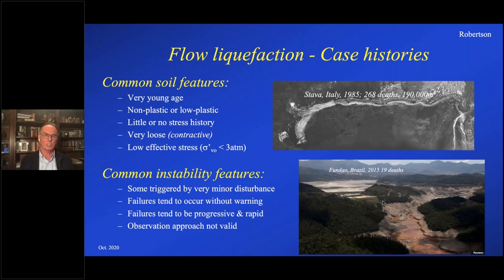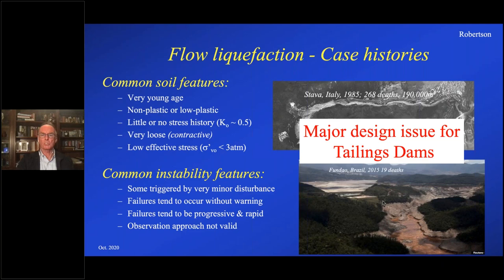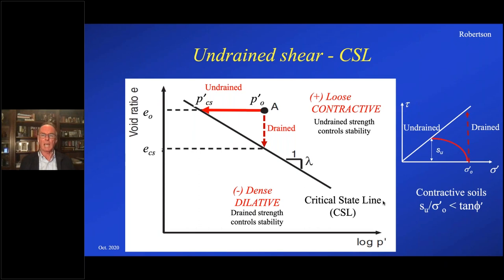Common instability features: the triggers are often minor. These instabilities are caused by very minor disturbances. Failures tend to occur without warning — they tend to be very rapid and progressive. Because they're so rapid and often occur without warning, the observational approach doesn't always apply because you don't have any time to respond. If the failure takes 10 seconds or so, you don't really have any time to respond. So it's a major design issue for tailings dams, and that's why this group is a good one to talk to — a lot of major geotechnical consulting firms that work in the mine tailings industry are centered in Vancouver.